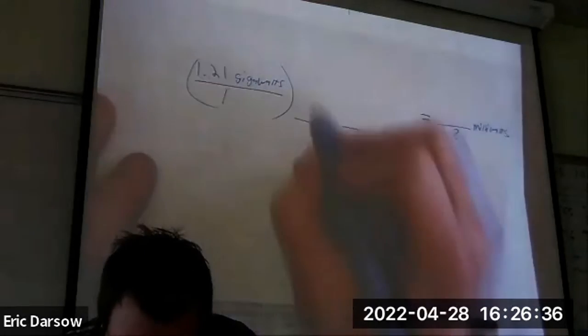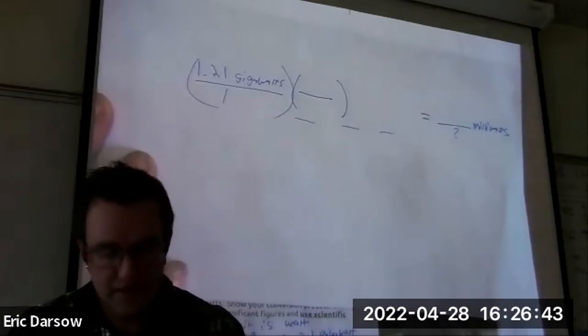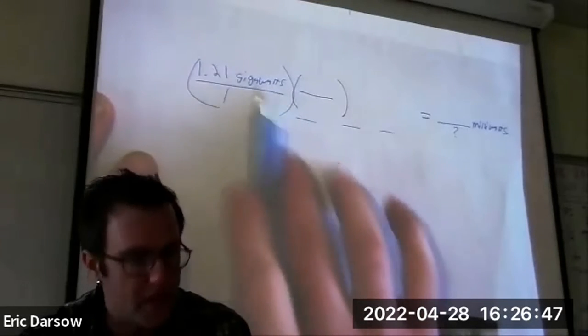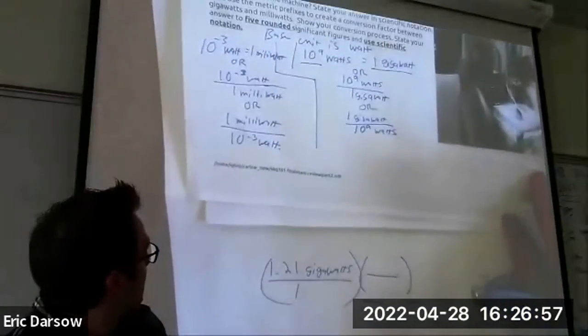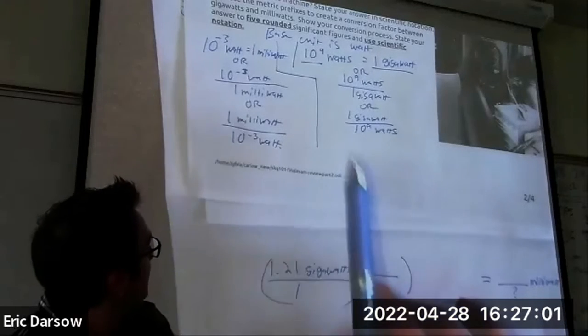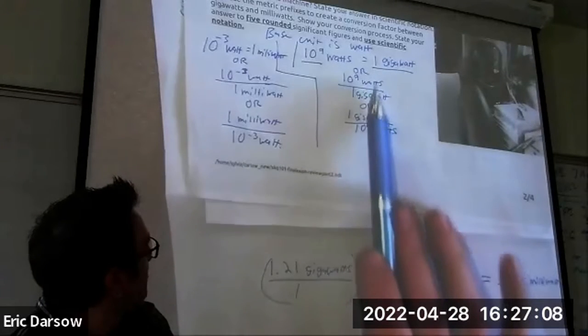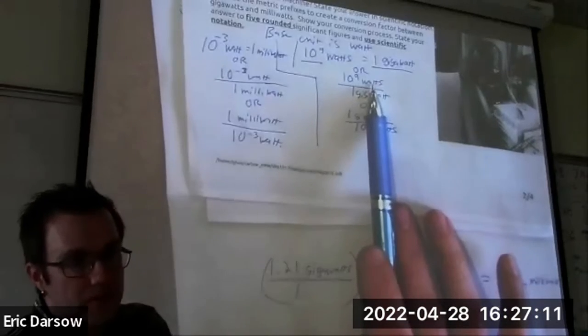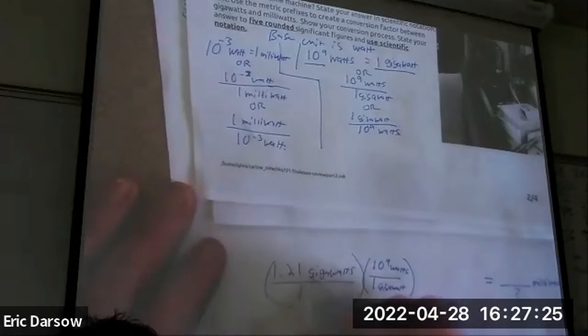We've got to do something to get us some number of milliwatts. Remember our pattern is choose the organization that cancels what you don't want, leaving what you do. You cancel by having it on top and bottom. Look at what we made - which one goes next? We want to cancel gigawatts. Here's my conversion that has what I want to get rid of on the bottom. Watts isn't where I want to go but it's closer.